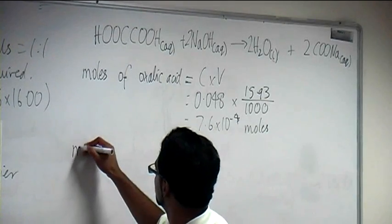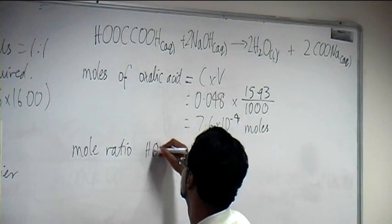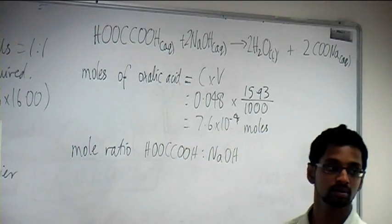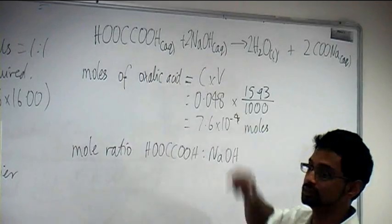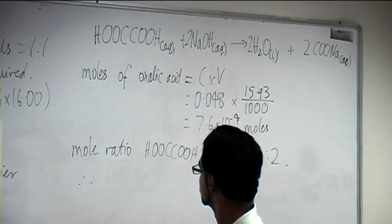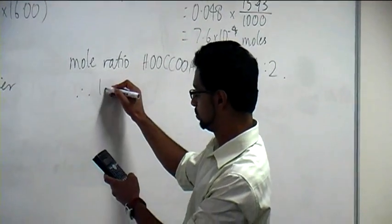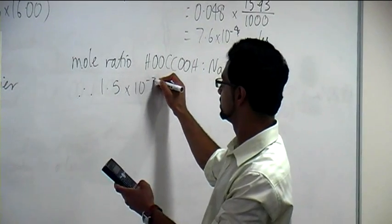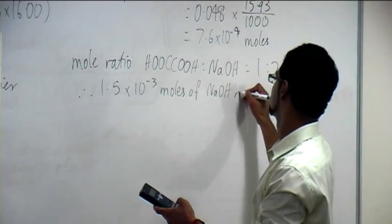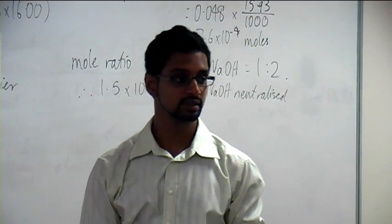Moles of oxalic acid. Now, what's our mole ratio? Our mole ratio of oxalic acid to sodium hydroxide is 1 to 2. So therefore, we can say, multiply by 2, 1.5 times 10 to the minus 3 moles of NaOH neutralized. That's how many moles we had in our reaction. That's how many we neutralized.